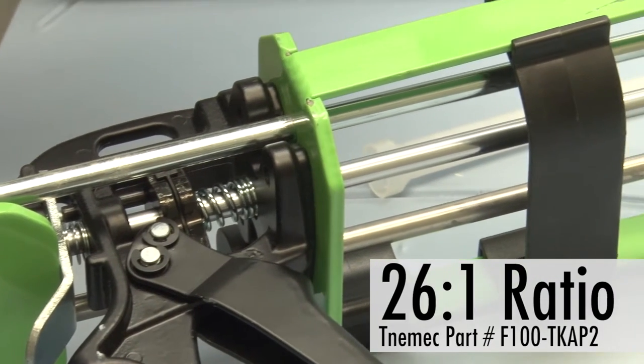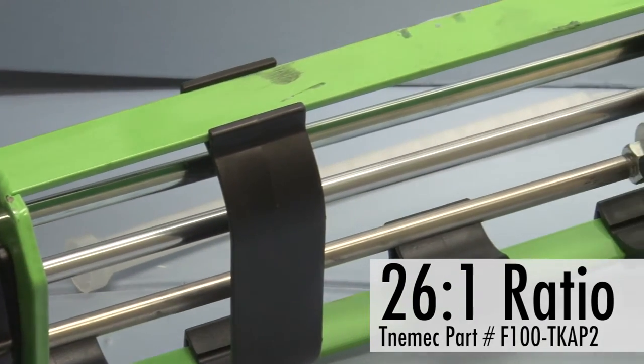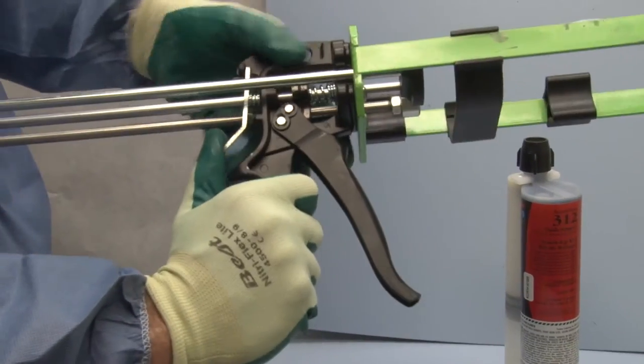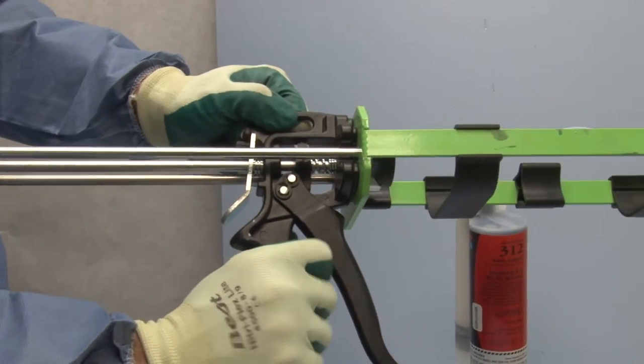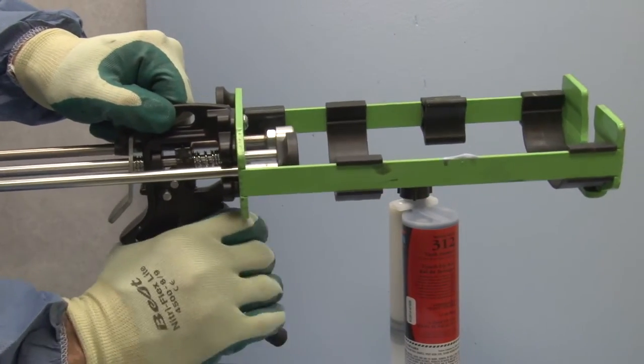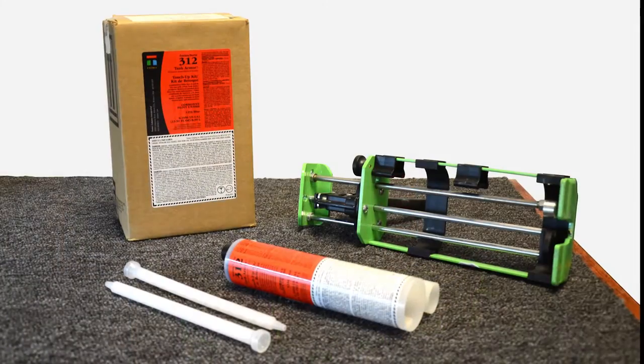Your first step is to obtain the dispense applicator. To complete the repair, use only the 26 to 1 High Thrust Ratio applicator supplied by Tonemic. Other applicators cannot be substituted and may result in improperly mixed material. Just as important, use only the supplied static mixing nozzle.